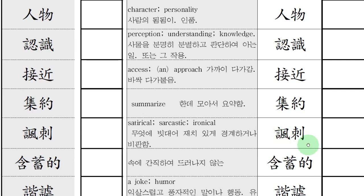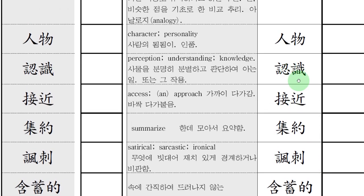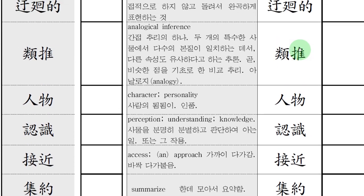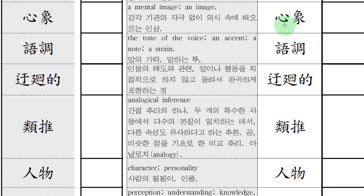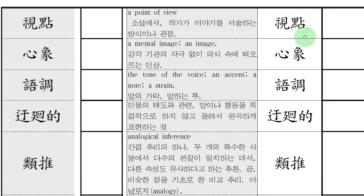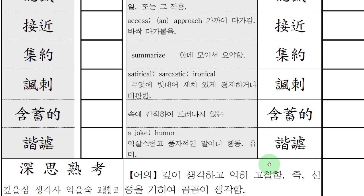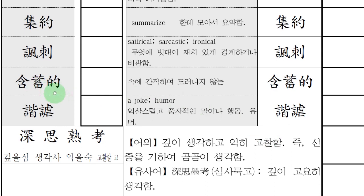위로 한번 읽어보겠습니다. 풍자. 집약. 접근. 인식. 인물. 유추. 우회적. 어조. 심상. 시점. 그 다음에 축적함. 이 함 자는 입안에다가 뭘 잔뜩 머금고 있는 거야. 머금을 함 자야. 축 자는 쌓을 축. 함축적이라는 게 뭘까요? 속에 간직하여 드러나지 않는다. 속에다 이렇게 입에 뭘 물고서 안 뱉은 상태니까 함축적이라는 얘기는 그런 얘기야. 이 글의 함축성. 함축적이다.